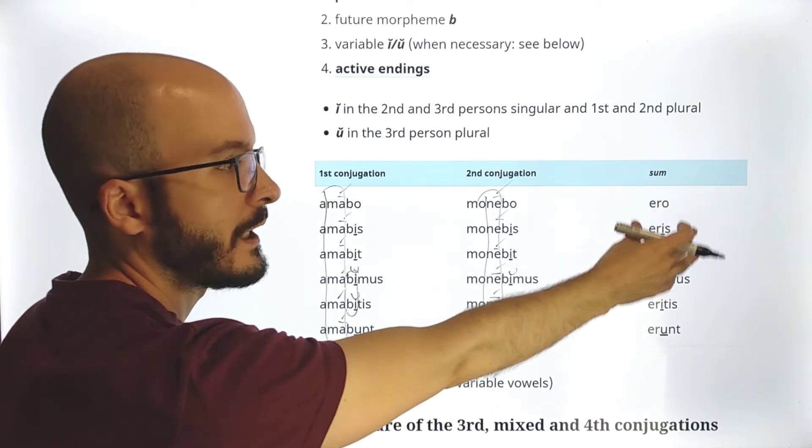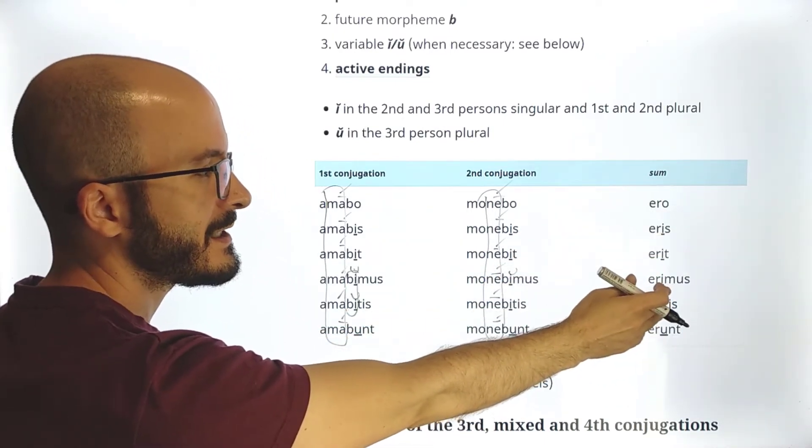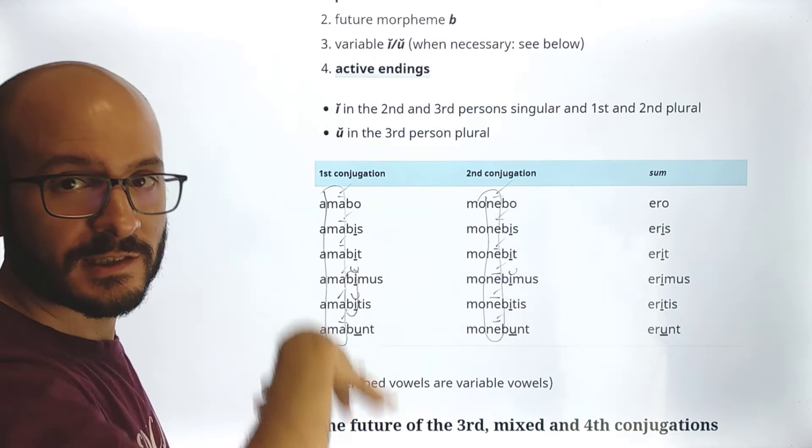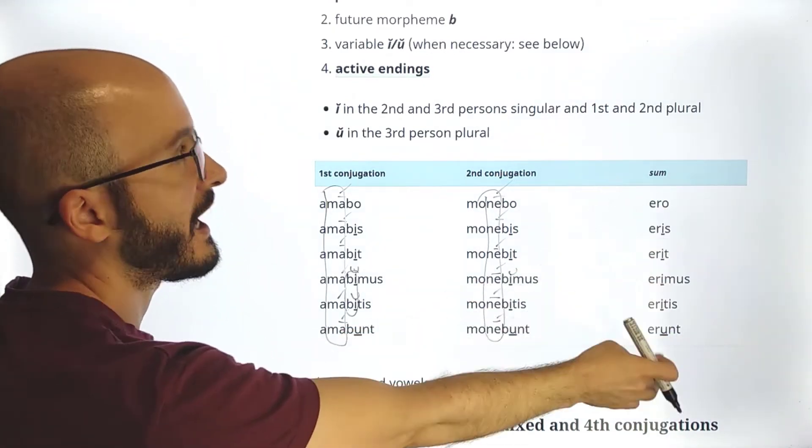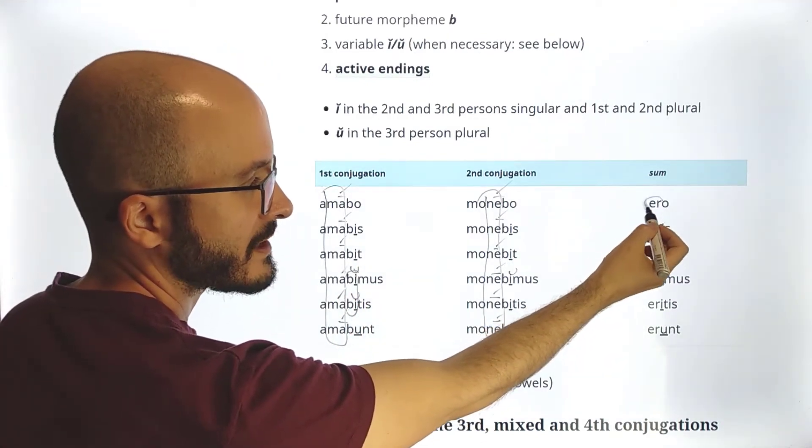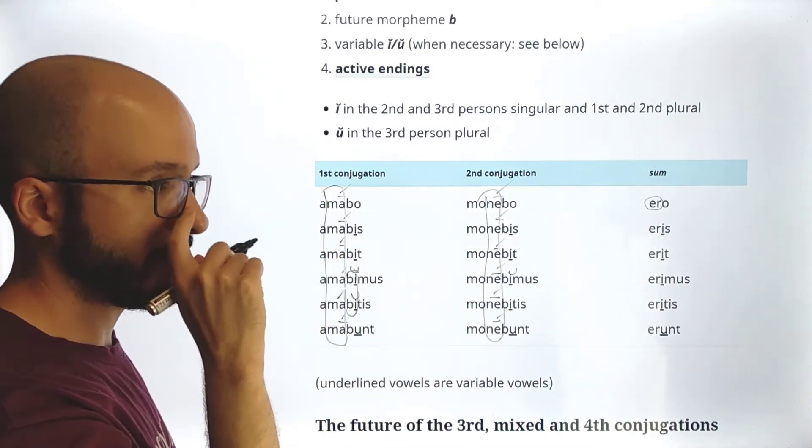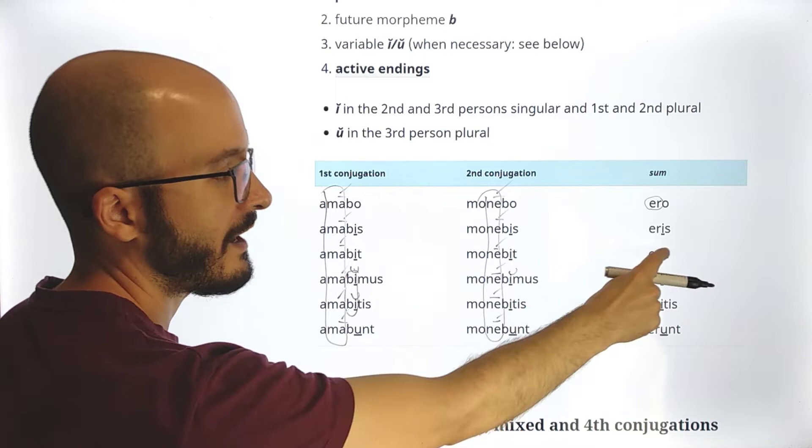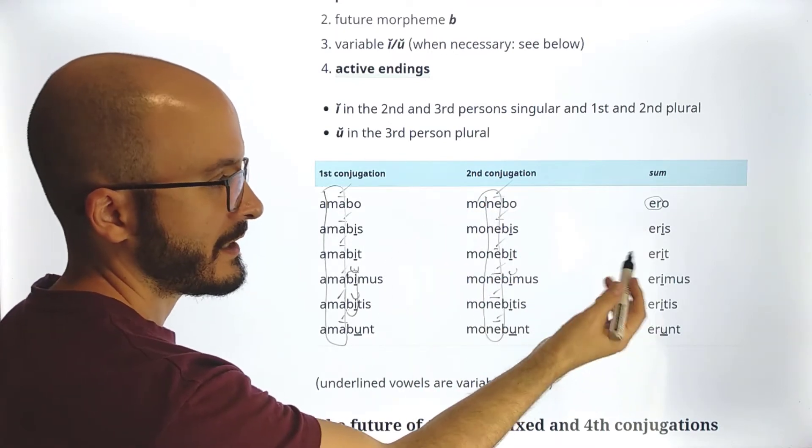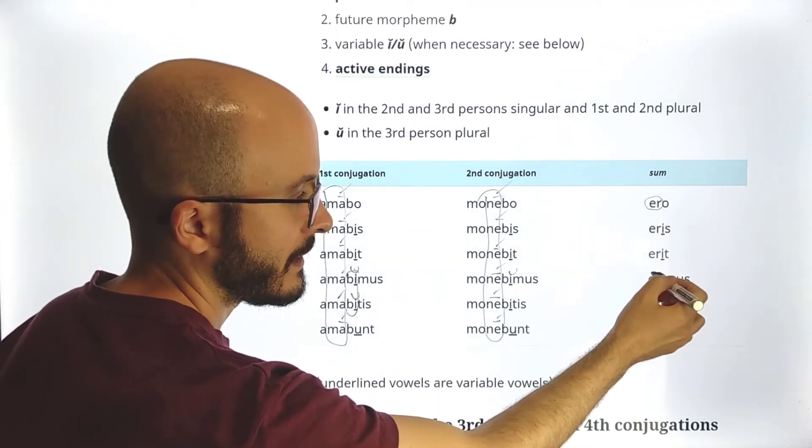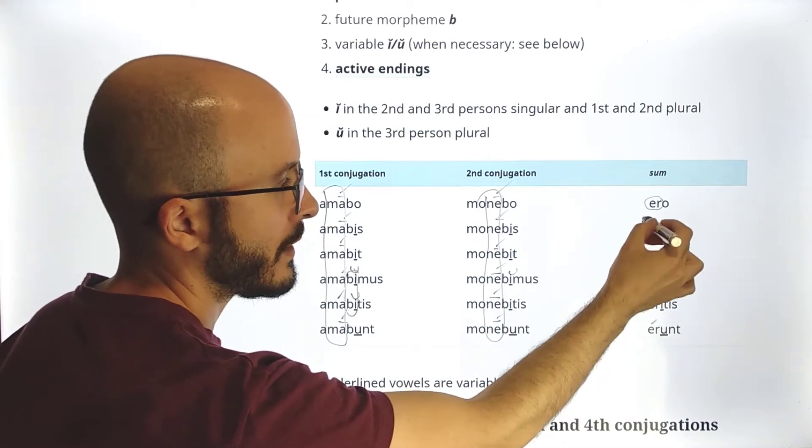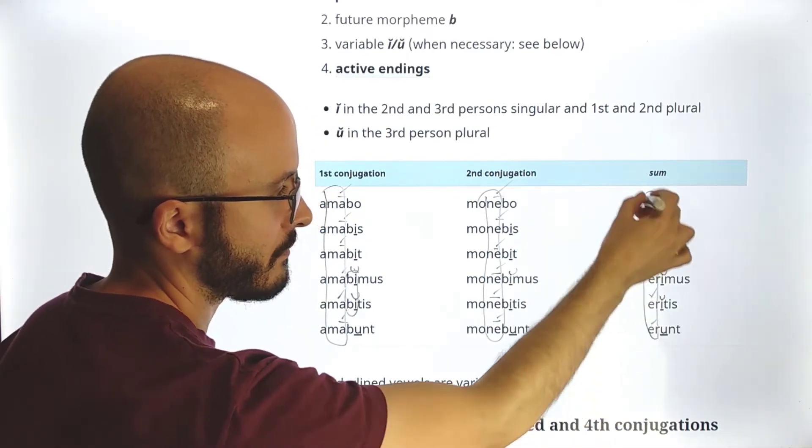And now I'm just putting the verb sum here in this table because it is definitely much more similar to these two than to the next type of future. But of course, it doesn't have B. It doesn't have B. So here we see actually that we have the same root that we saw in the imperfect tense, and then we do have this E, E, E, E, U. So ero, eris, erit, erimus, here because this E is short, this E is short. So erimus, eritis, erunt. So once again, the accent is always in the same syllable.